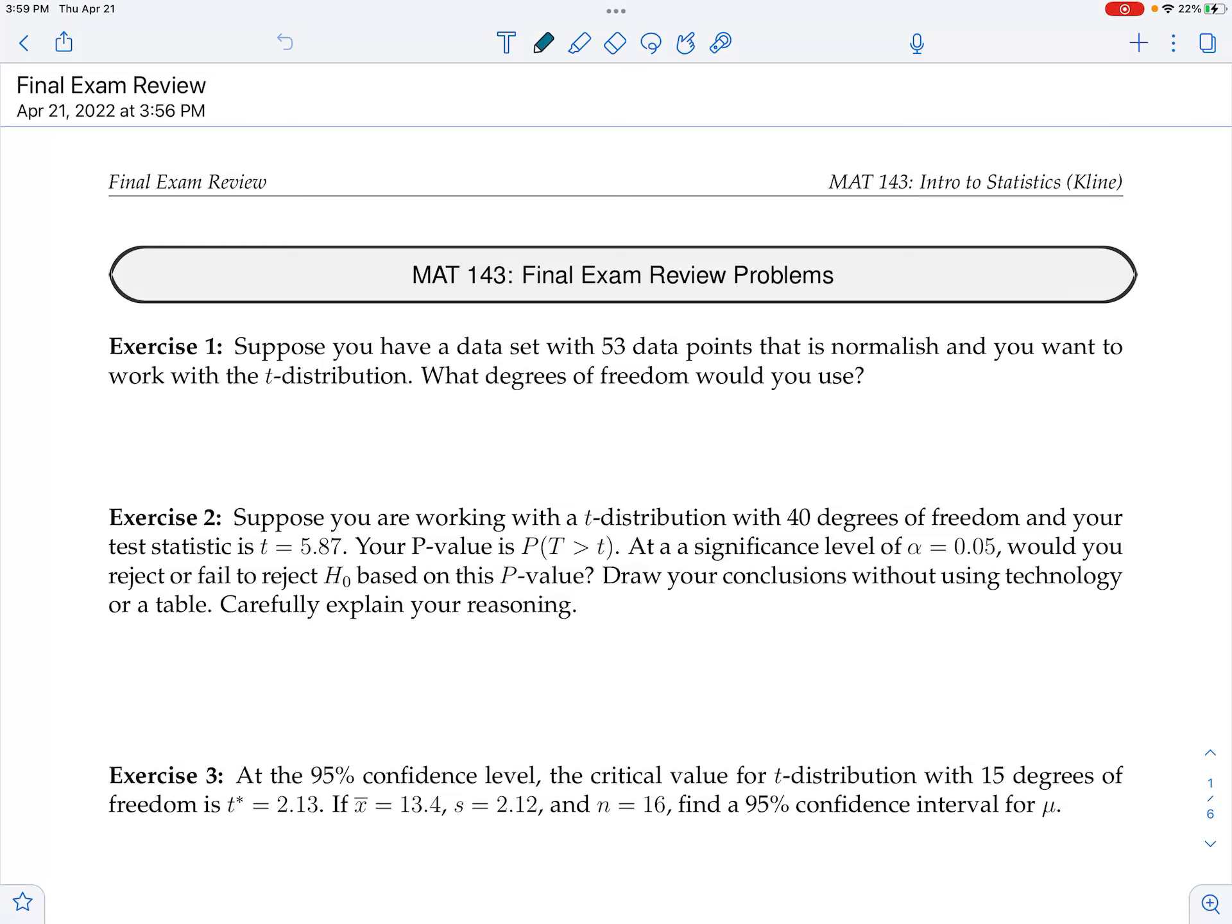Exercise 1. We've got 53 data points, so that's telling me that n is 53. Working with the t-distribution, we're asked to figure out what degrees of freedom would you use. So the degrees of freedom we know are just n minus 1, so 52.